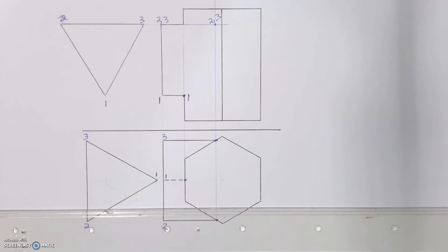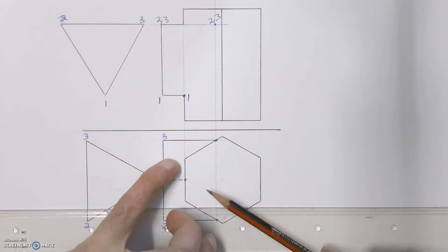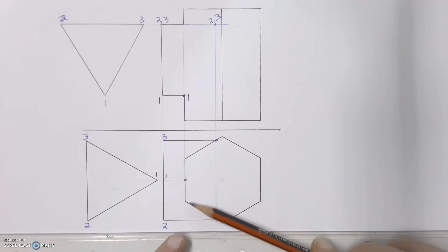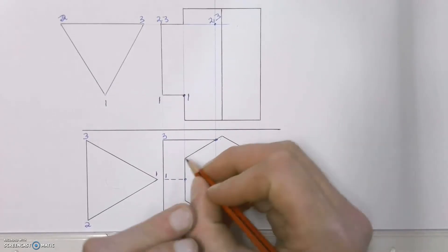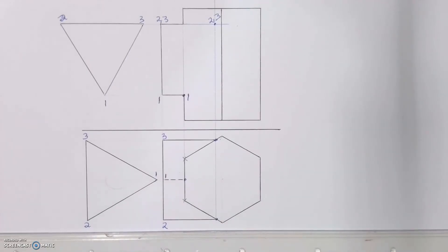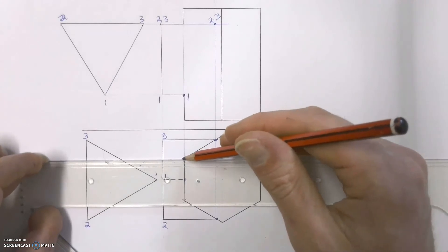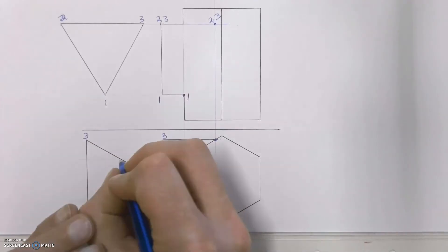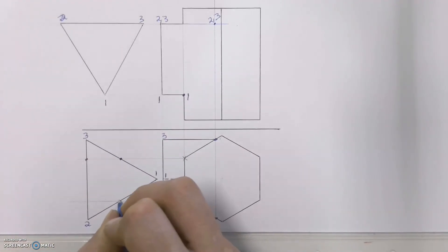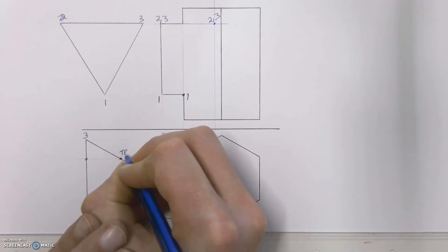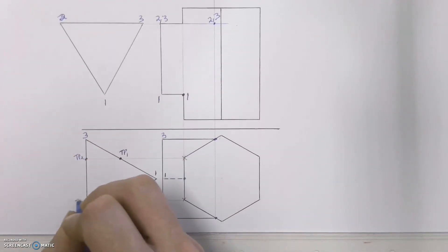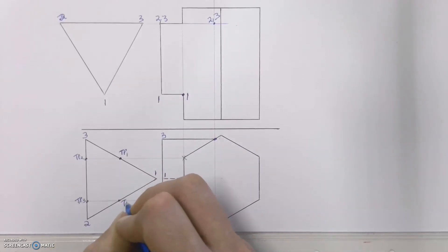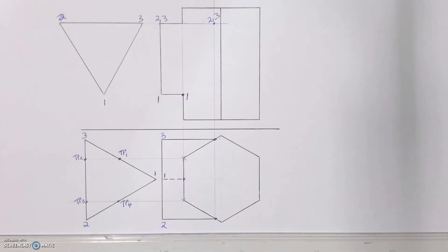Now we go to the turning points. Turning points are wherever our secondary pipe hits into a corner of the main pipe — wherever the secondary pipe hits a corner of the main pipe creates a turning point. We've got two of them — I'm going to mark those with an X. To get those two turning points into our front view, we project them across into our auxiliary view in the top view where they cut it in two places each. I'm going to label those as TP1, TP2, TP3, and TP4.